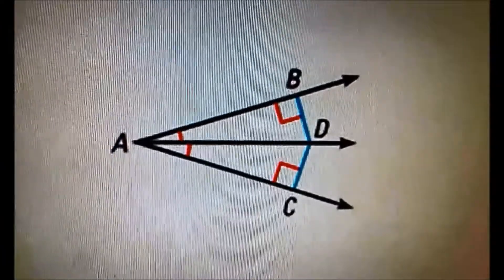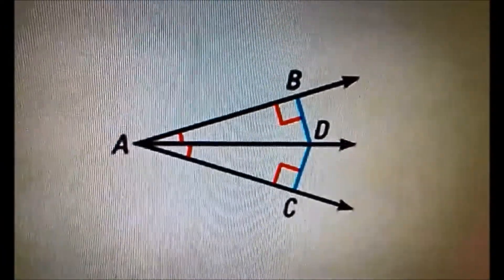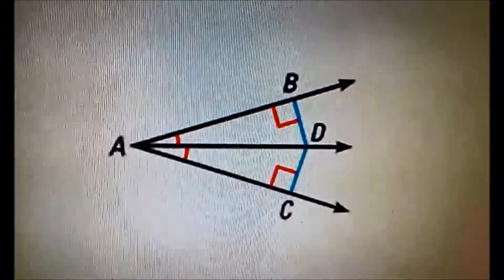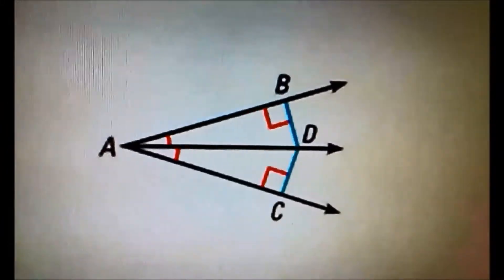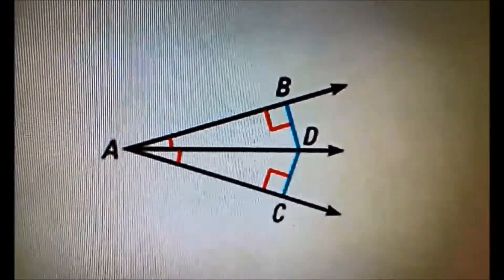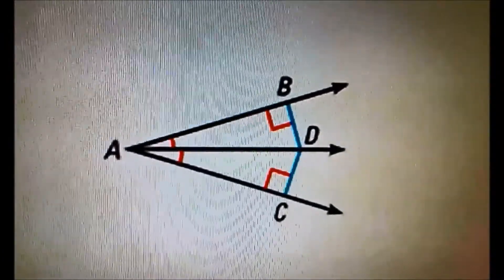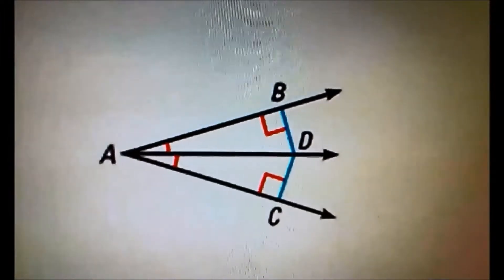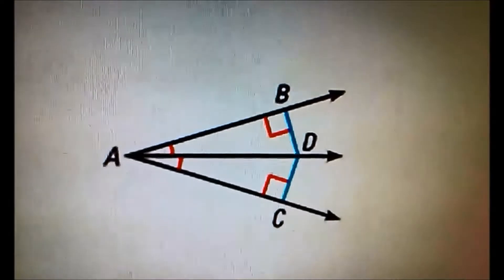Now we move on to the converse of angle bisector theorem. We use the same example for this one. So, if DB is perpendicular to AB, and DC is perpendicular to AC, and DB equals DC, then AD bisects angle BAC.